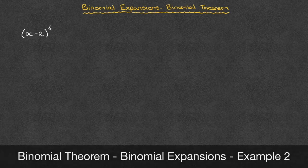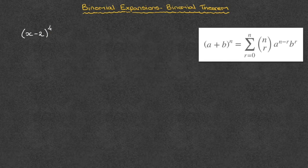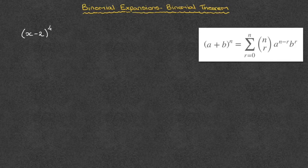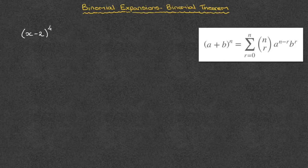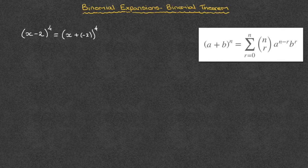Say we have to write all the terms in the expansion of x minus 2 raised to the power of 4. Comparing this to the binomial formula on the right-hand side, the first thing we notice is that instead of having x plus 2, we have x minus 2. When that happens, the first thing to do is to rewrite this as an addition — x plus negative 2, all raised to the power of 4.